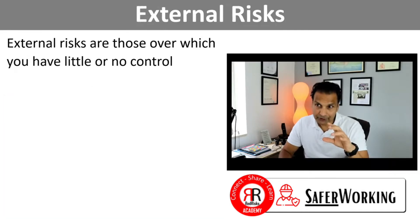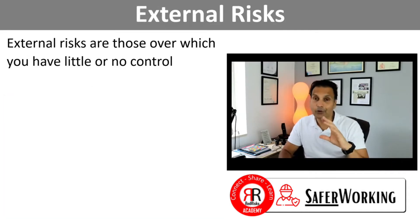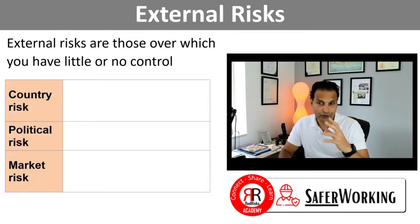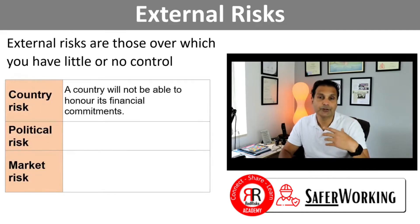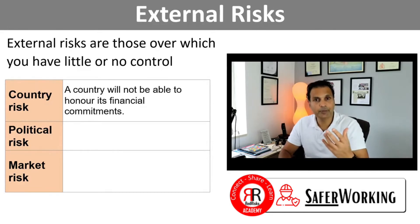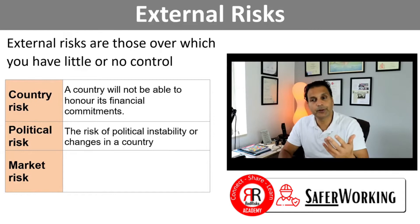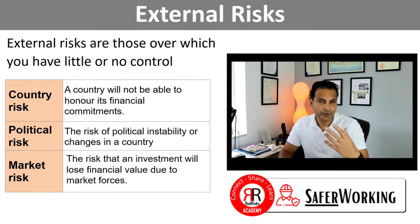External risks, however, are those which you have little or no control over — things such as country risk, where a country is not able to honour its financial commitments. Political risks, of course, are the risks of political instability or changes in a country. And market risks, for example, volatility in stocks and shares.